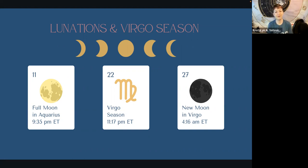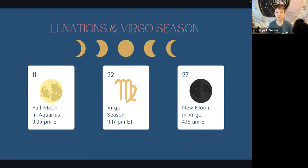Our first full moon will be on the 11th of August at 9:35 p.m. Eastern time — be sure to adjust for your time zone if timing is important for any rituals or intentions you're working on. On August 22nd we will move into Virgo season, with the sun officially moving into Virgo at 11:17 p.m. Eastern time. And then on the 27th we will have the new moon in Virgo at 4:16 a.m. Eastern time.